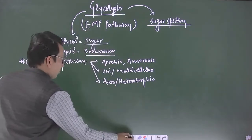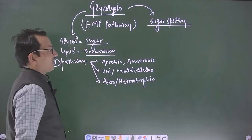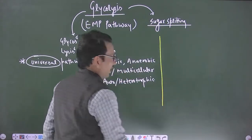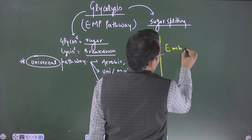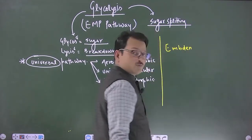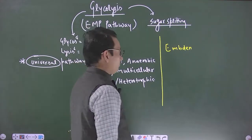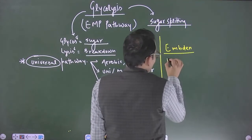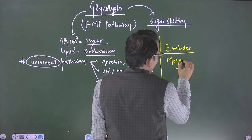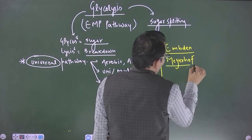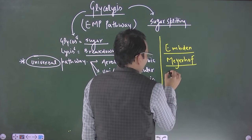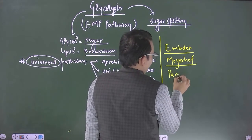If we are talking about the discovery, we can clearly know that this was discovered by a group of scientists called Embden as per NCERT, Gustav Embden. Second is Meyerhoff and the third is called as Jacoparnas.